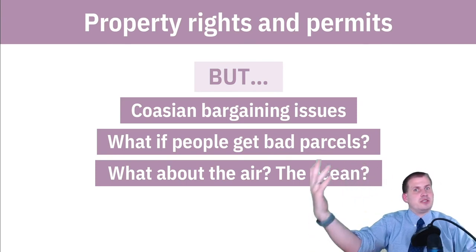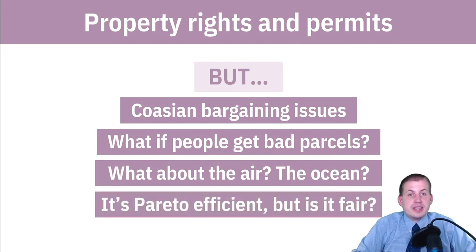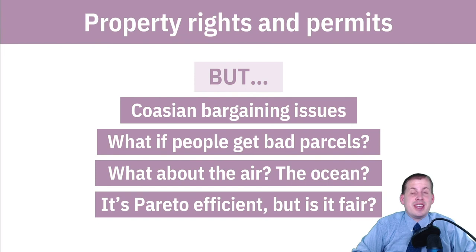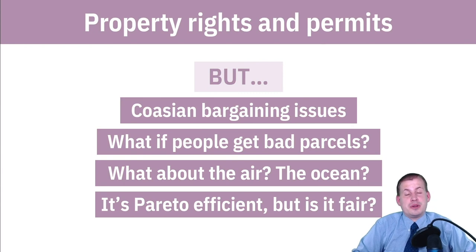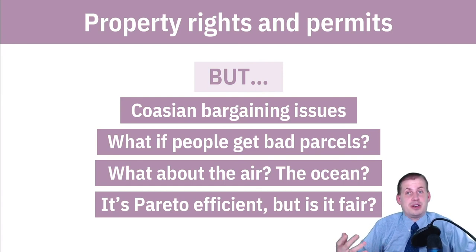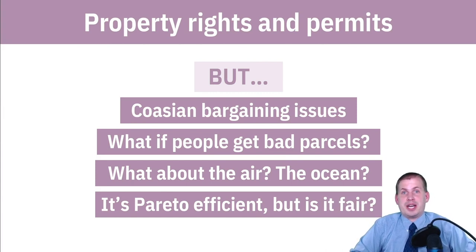This system is Pareto efficient — great for everybody overall — but it's not necessarily fair. People will get bad parcels, and if they're not great negotiators they'll be stuck with them. Even great negotiators mean someone gets the short end of the stick. There's no guidance in private solutions to common pool resource problems for how to address these inequities. Natural power imbalances mean that people with more power in society will benefit more from the parceling, so the outcome won't necessarily be equitable or just.